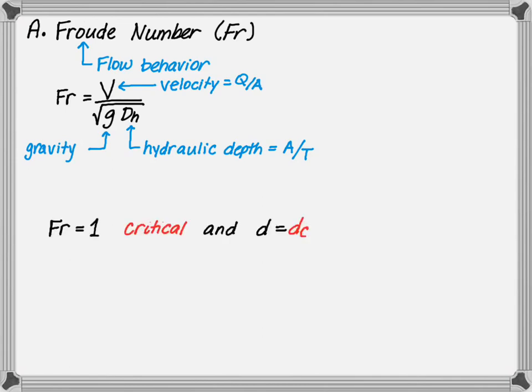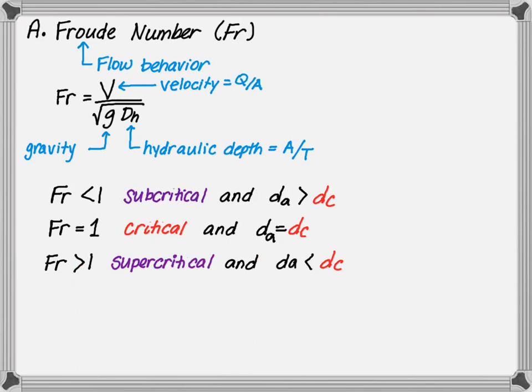When the Froude number is equal to one, the flow is considered critical and the corresponding depth is defined as critical depth. When the Froude number is less than one, the flow regime is defined as subcritical and the corresponding depth is greater than the critical depth. When the Froude number is greater than one, the flow regime is defined as supercritical and the corresponding depth is less than the critical depth. It should be noted that critical depth is not stable and will not occur for extended periods of time within an open channel.